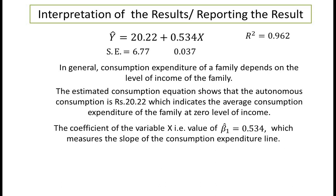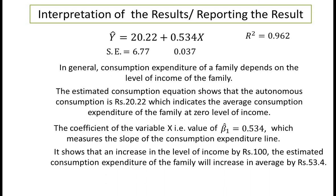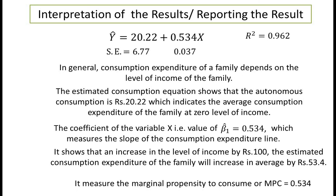In general, consumption expenditure of a family depends on the level of income. The autonomous consumption is rupees 20.22, indicating the average consumption expenditure at zero level of income. The coefficient β₁ cap = 0.534 measures the slope of the consumption expenditure line — an increase in income by rupees 100 leads to an average increase in consumption expenditure of rupees 53.4. This measures the marginal propensity to consume, MPC = 0.534. Thus, this is an example of application of simple linear regression analysis and estimation of a consumption function for the two-variable case.